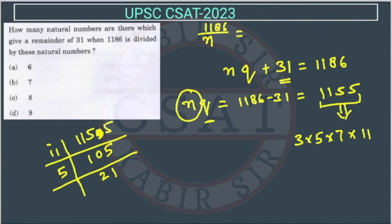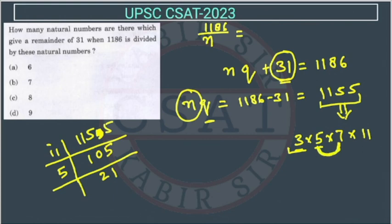We need those numbers which are greater than 31, because only then can the remainder be 31. For example, if I divide by 3, I cannot get 31 as a remainder. If dividing by 5, we get remainder 1, not 31. But if we divide by 35 (5×7), we can get remainder 31, since 35 does not go in once evenly.